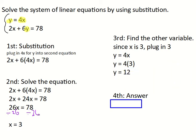So x is 3, y is 12. State your answer. Remember, when you write your answer, put the x value first, followed by the y value. So my answer would be the ordered pair (3, 12).